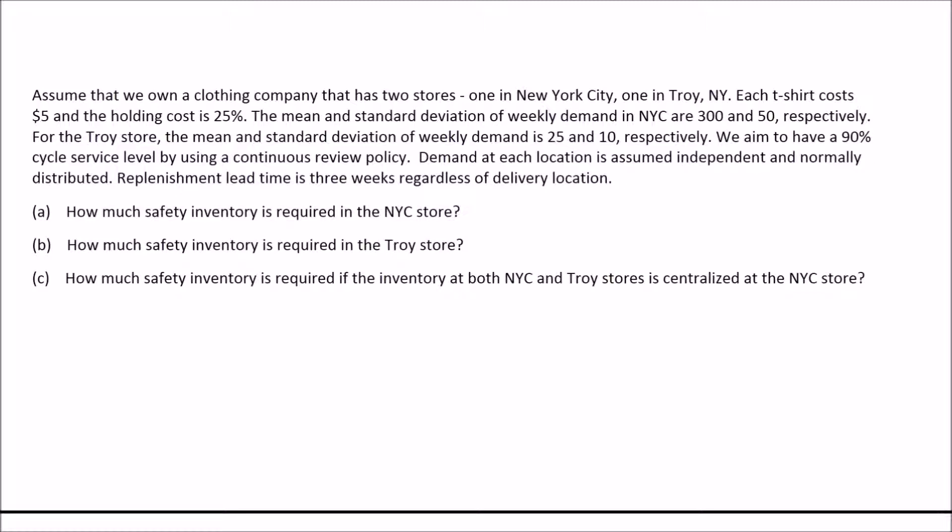In our example, we assume that we own a clothing company that has two stores — one in New York City and the other in Troy, New York. Each t-shirt costs us $5 and the holding cost is 25% of the unit cost. The mean demand for NYC is 300 t-shirts with a standard deviation of 50, and for Troy the mean demand is 25 t-shirts with a standard deviation of 10. All demand values are weekly.